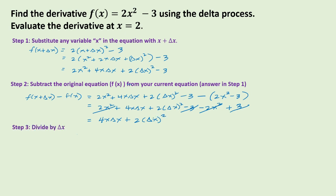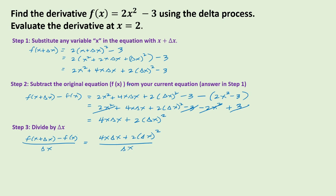Step three is to divide by delta x. So we have f of x plus delta x minus f of x over delta x. Our answer from step two is 4x delta x plus 2 delta x squared over delta x. Factoring out delta x from the numerator gives delta x times 4x plus 2 delta x over delta x, and we can cancel delta x, leaving 4x plus 2 delta x.